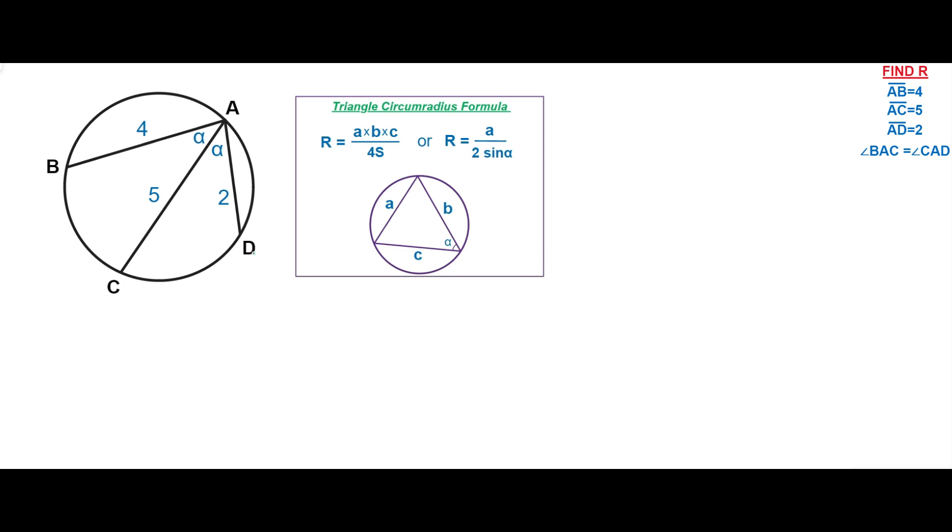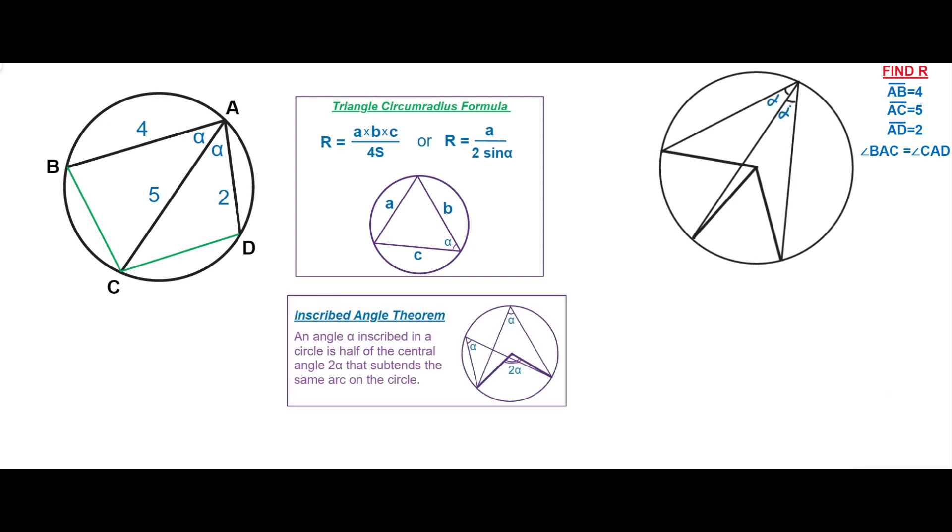First, let's prove that chords BC and CD are congruent. Let's draw a circle and two inscribed angles that lie on the congruent arcs. According to the Central Angle Theorem, these two angles are 2 alpha.